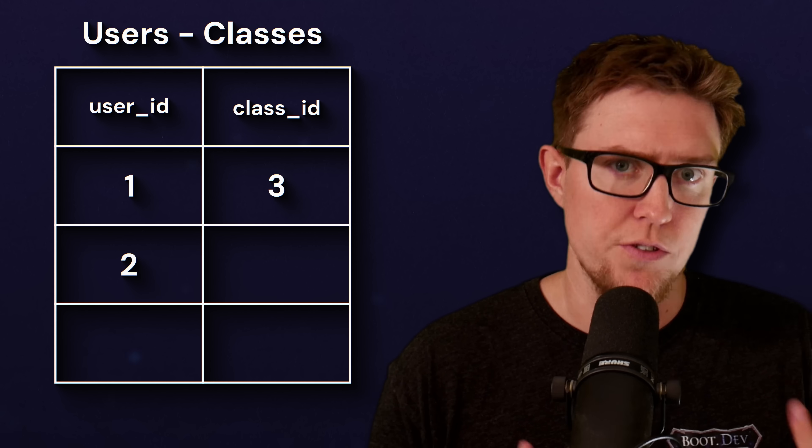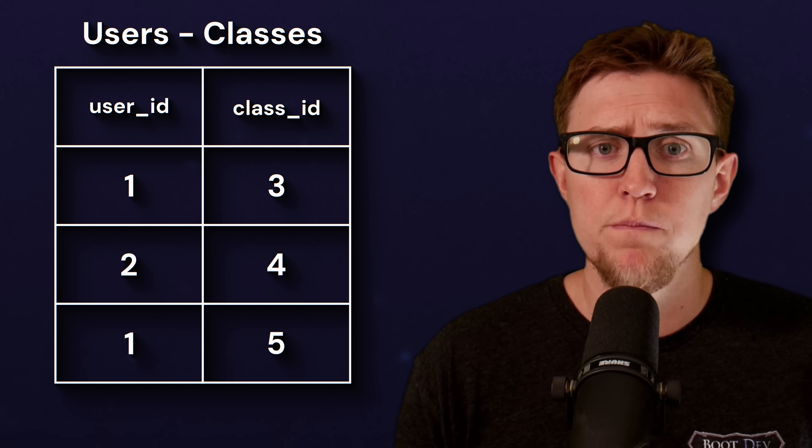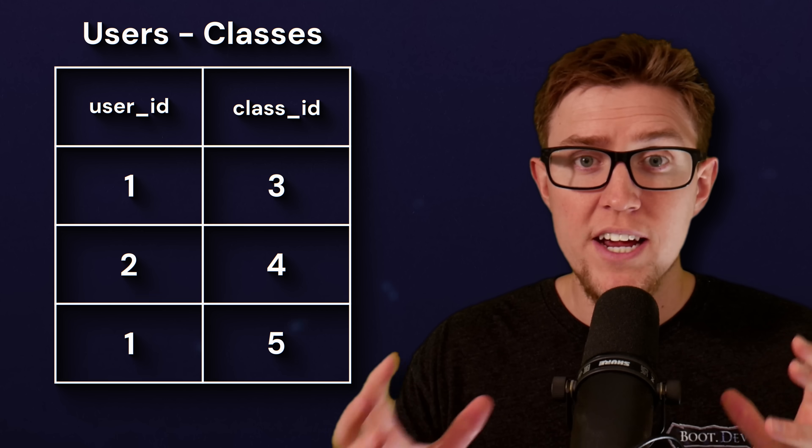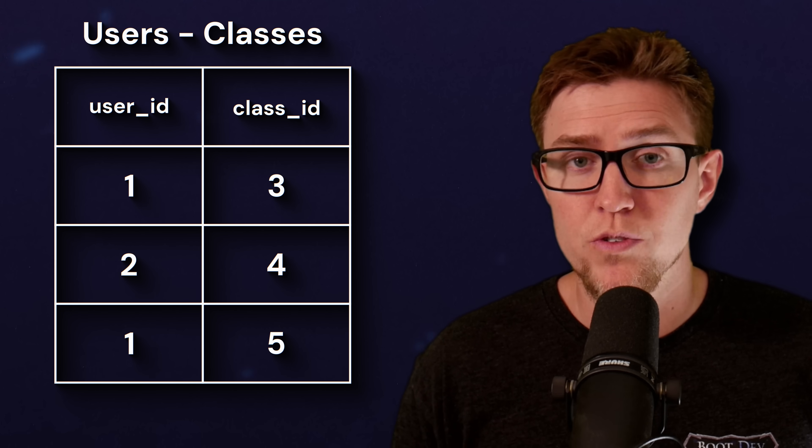User one is in class three, user two is in class four, user one is in class five. There's not much point in adding a third ID column because the unique combination of user ID and class ID does the job — you can't enroll in the same class twice. When we use the term primary key in a software engineering sense, we're usually referring to an ID column or a specific combination of columns. But in an academic normalization sense, primary key means the smallest number of columns that can uniquely identify a row in an actual dataset.